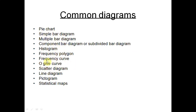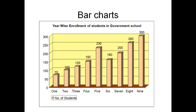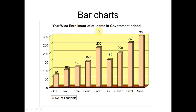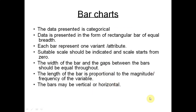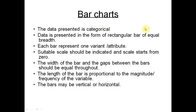Bar charts represent categorical data. Each bar represents one attribute — for example, the number of students in each class from class one to ten. The width of each bar and the gaps between bars should be equal throughout. The length of the bar is proportional to the magnitude or frequency of the variable.